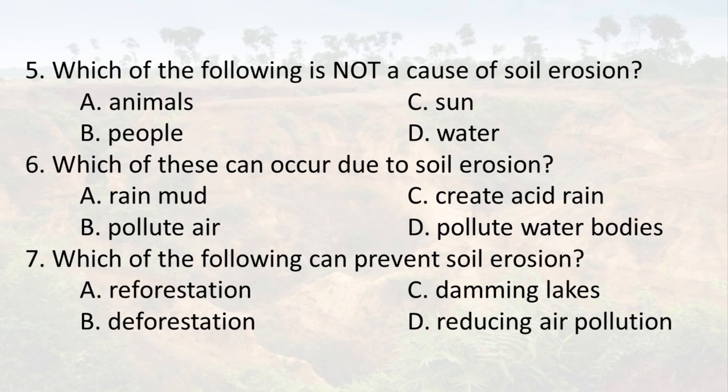6. Which of these can occur due to soil erosion? A. Rain mud. B. Pollute air. C. Create acid rain. D. Pollute water bodies.